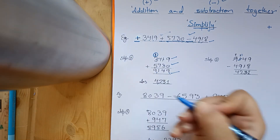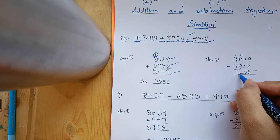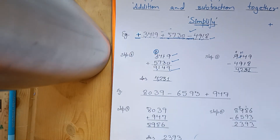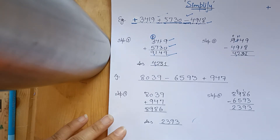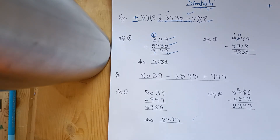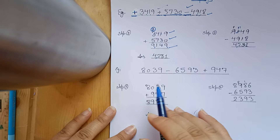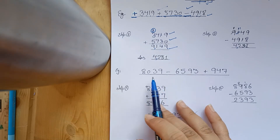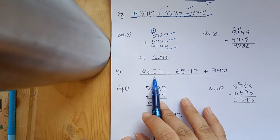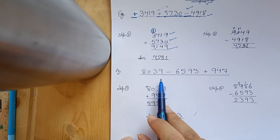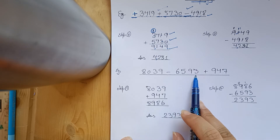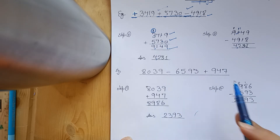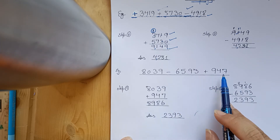And wherever you have to put the comma, you can put it. Do you know how many digits we put the comma? Now let's take one example. Suppose we have 8,309 minus 6,593 plus 947.